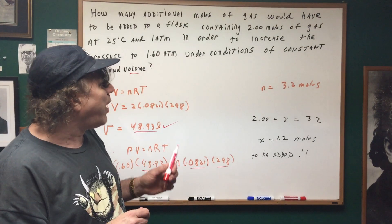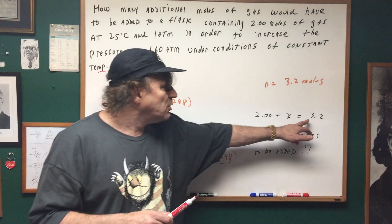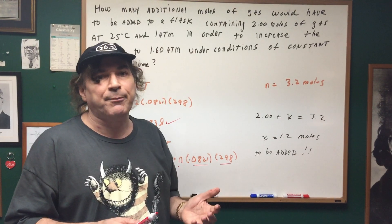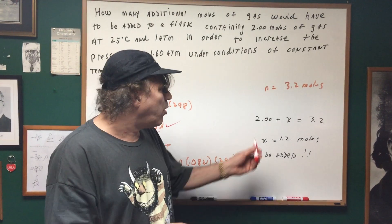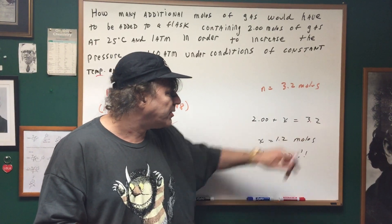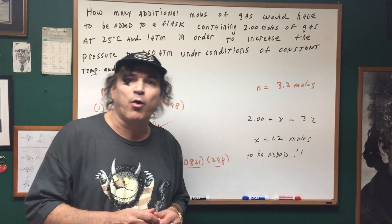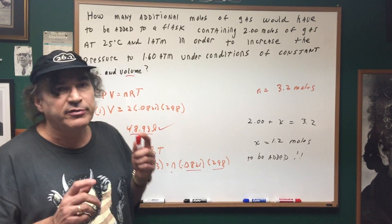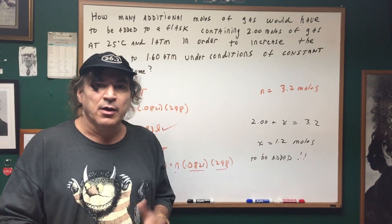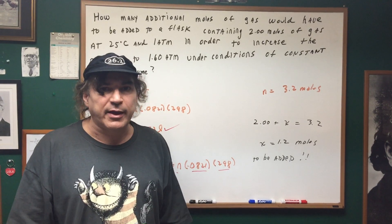Now the total number of moles comes out to be 3.2 moles, but that's not what they're asking. They want to know how many additional moles. So we know the total is going to be 3.2, we started with 2 moles, so 2 plus some number is going to be 3.2. So we need to add 1.2 moles of additional gas to the flask.